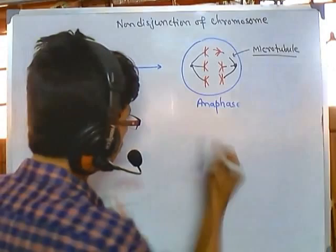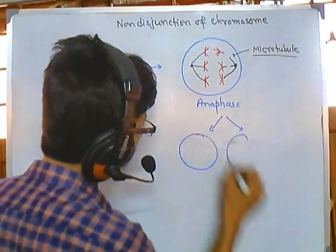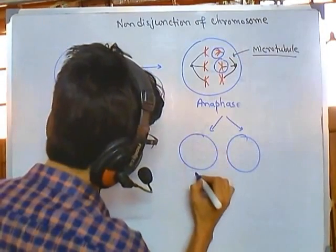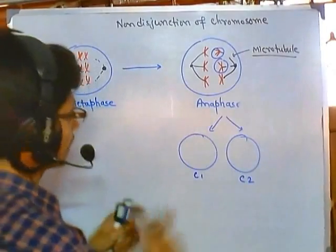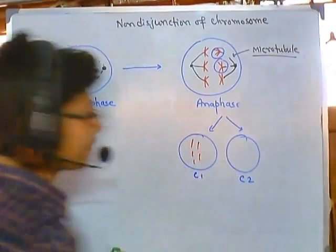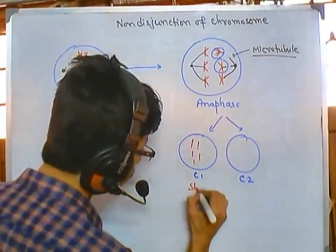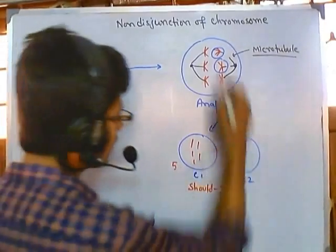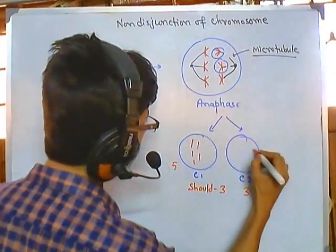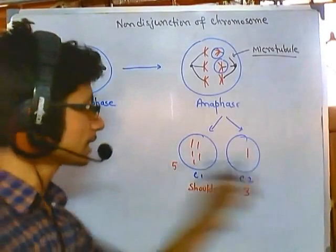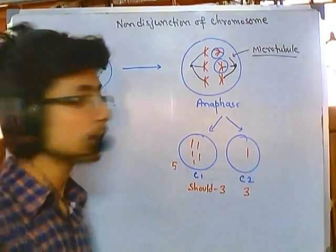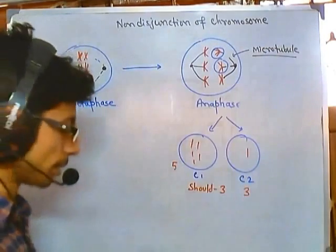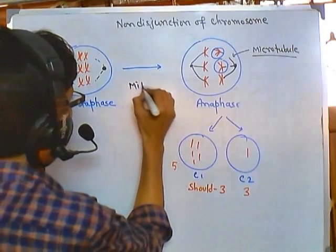As a result, after the cell division, one cell receives more chromosomes than it should. For example, one cell receives five copies of the chromosome, but it should receive only three. And in this case, the other cell should receive three, but it now receives only one. That's the difference during chromosomal segregation — this is how the different non-disjunction occurs, and this process occurs during mitosis cell division.